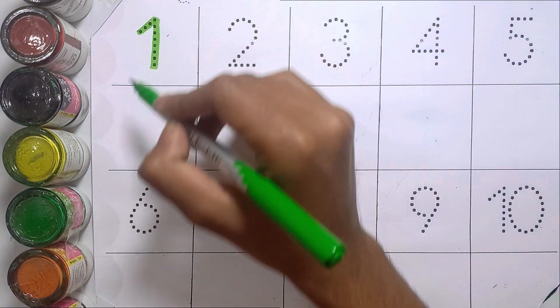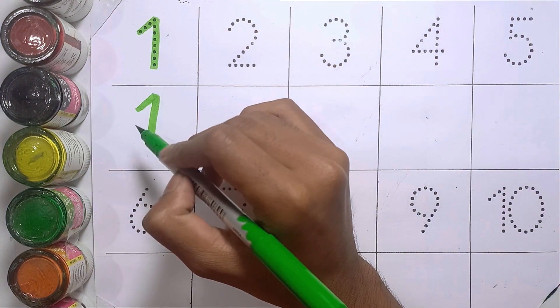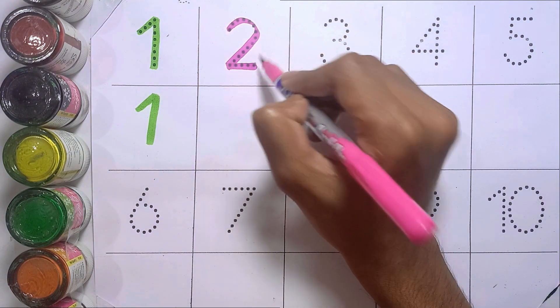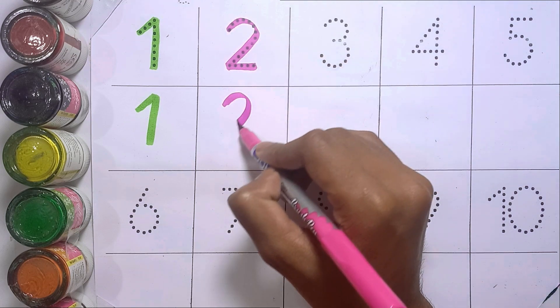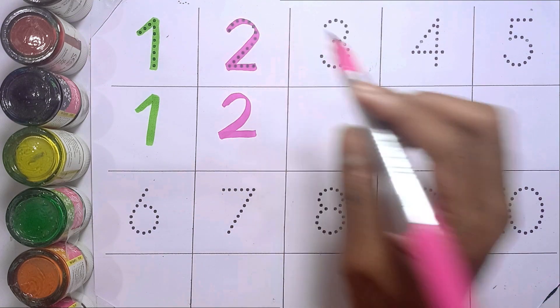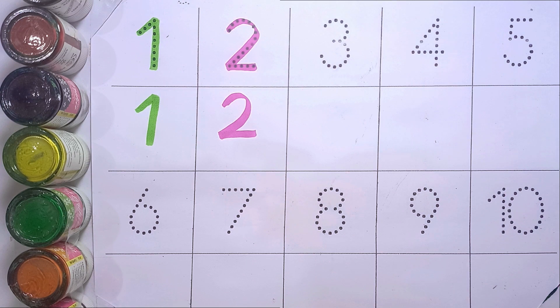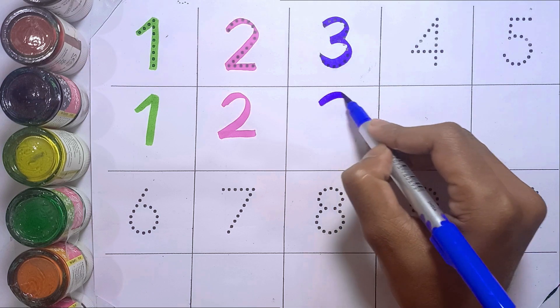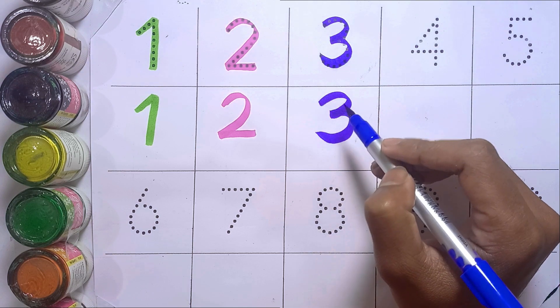One. O-N-E, one. Two. T-W-O, two. Three. T-H-R-E-E, three.